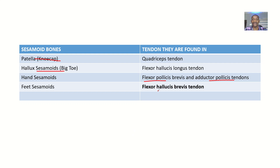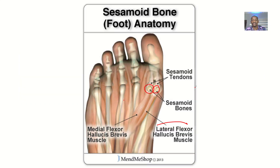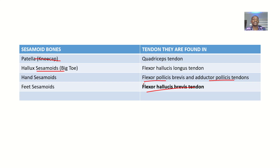Then we have sesamoid bones in the feet, found in the flexor hallucis brevis tendon. The flexor hallucis longus also contains these hallux sesamoids. So on that basis, there are not really that many sesamoid bones in the body.